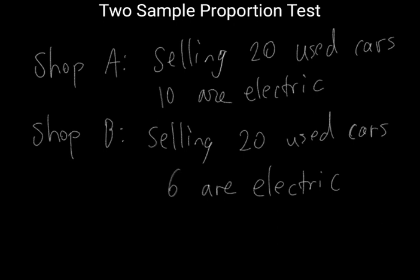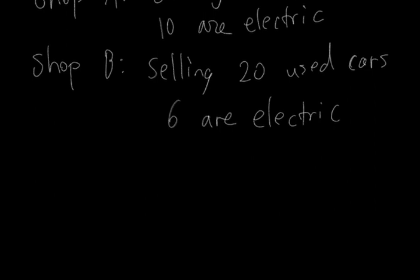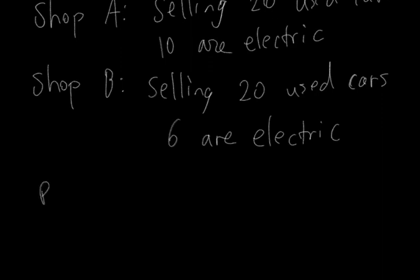The way we would go about computing this is, first we will compute the proportion of electric cars for both shop A and shop B. For shop A, we have P1, which is 10 of 20 are electric, and this is a proportion equal to 0.5.